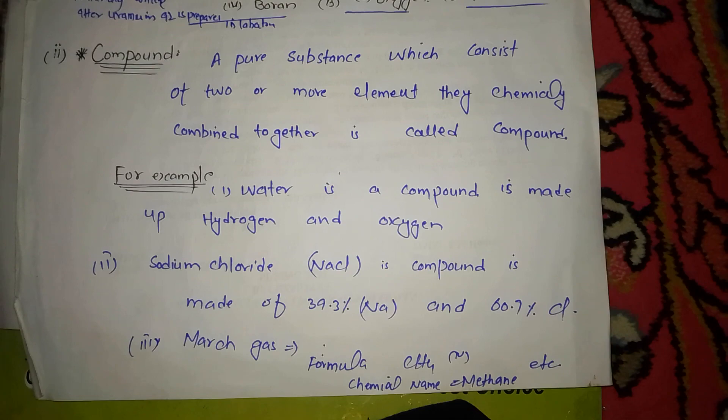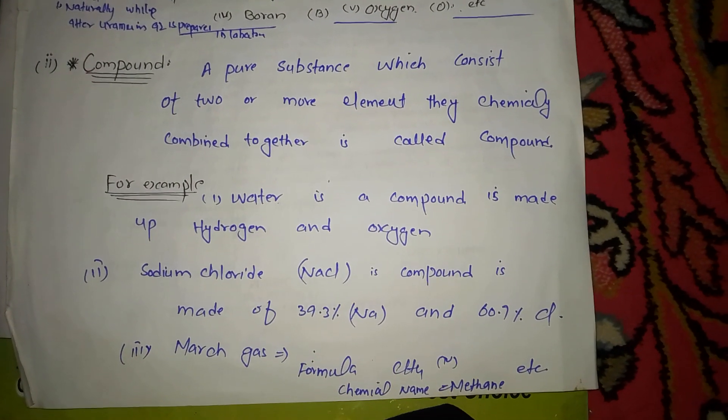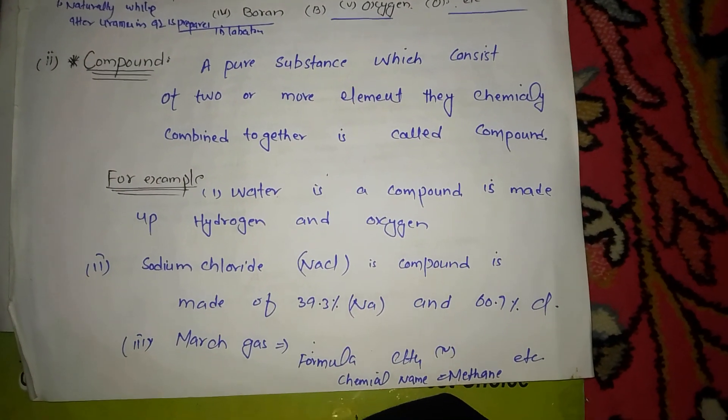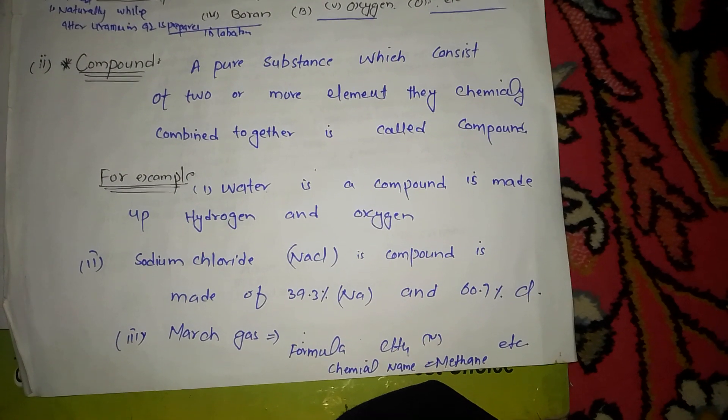60.77% chlorine. Next example: marsh gas, chemical name is methane, formula CH4.